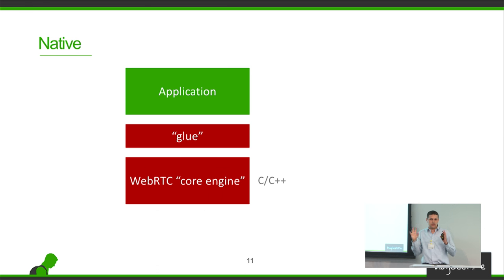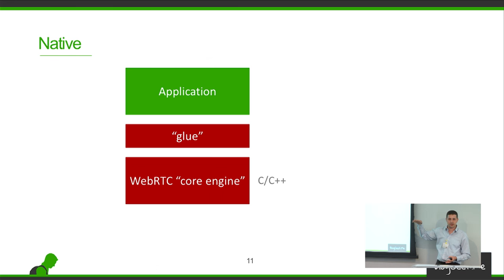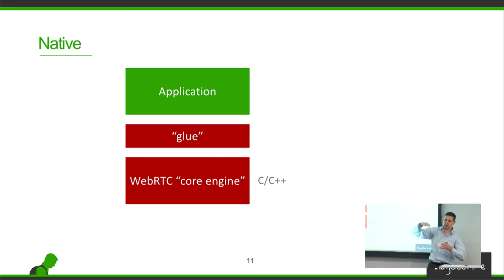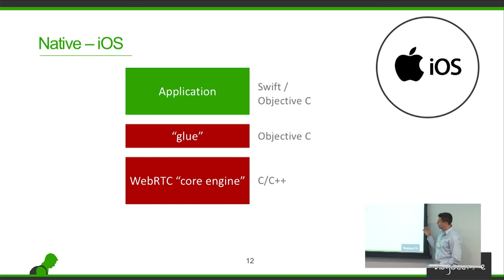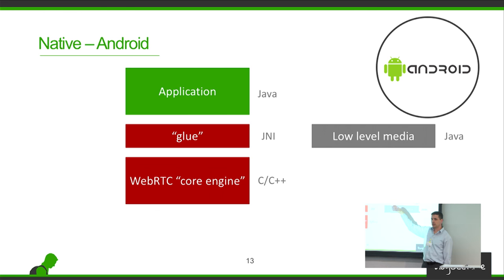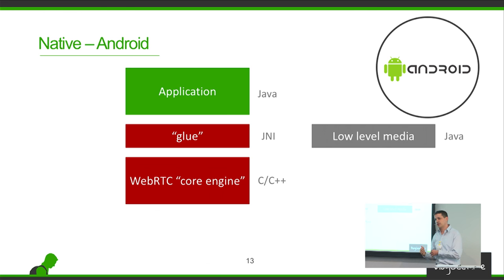When talking about native development, you run directly on the device. For that, you need to split WebRTC and your application into three parts: the application code itself, the WebRTC core engine written in C or C++, and a glue layer that brings the WebRTC functionality into your app. On iOS, that glue is Objective-C and your app is Objective-C or Swift. On Android, the glue is JNI and your app is Java — with the added complexity that all low-level media access must go through Java, not C.